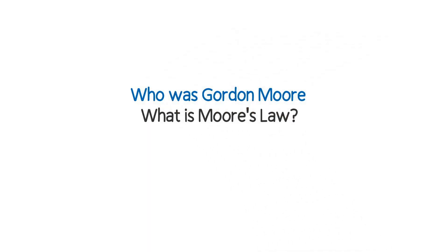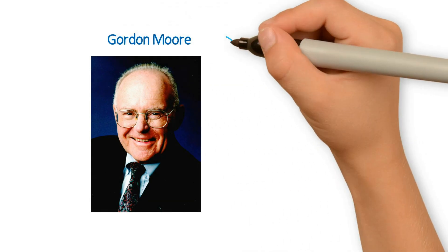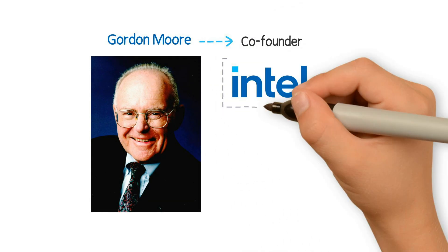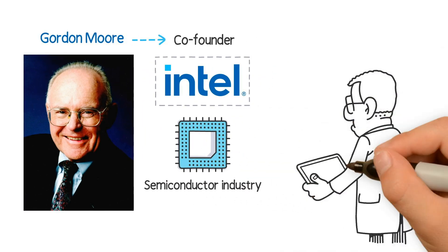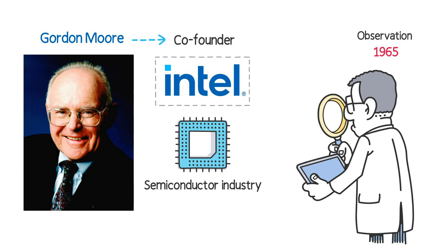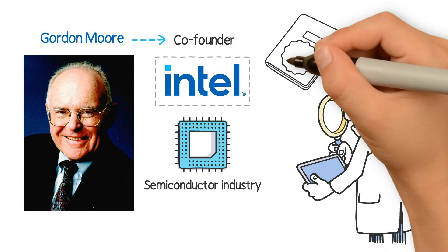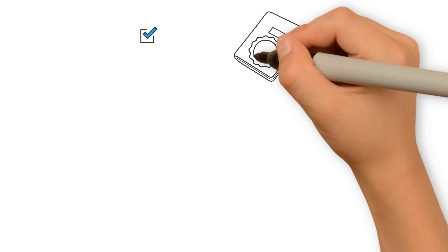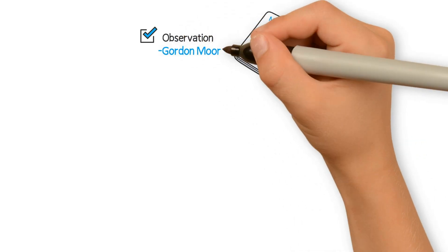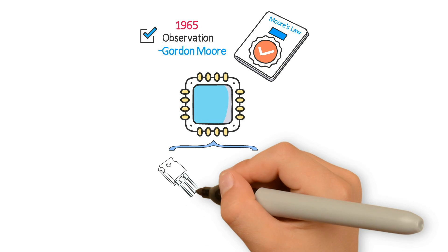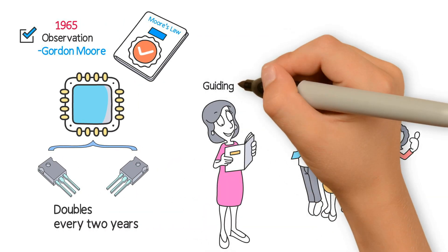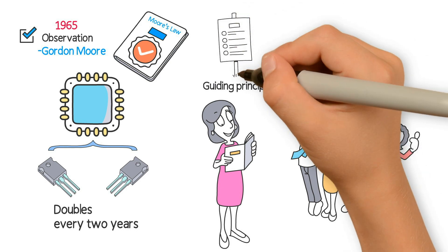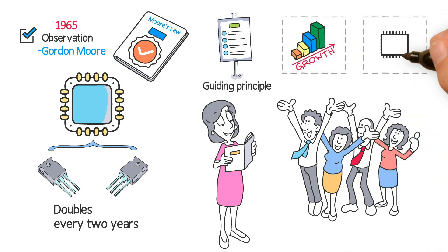Who was Gordon Moore and what is Moore's Law? Gordon Moore was co-founder of Intel Corporation and a pioneer in the semiconductor industry. He is best known for his observation made in 1965 which became known as Moore's Law — the number of transistors on a microchip doubles approximately every two years.